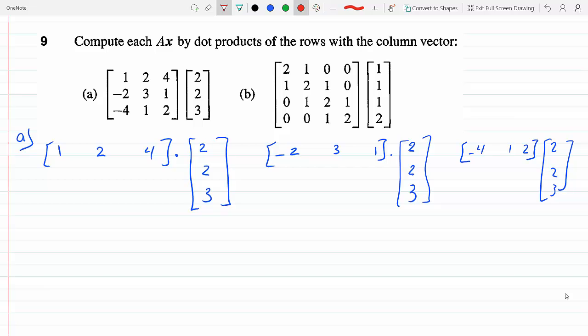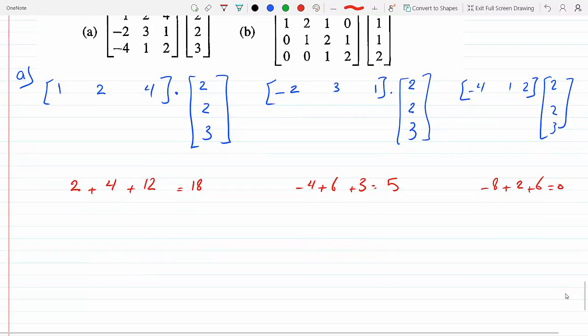this is going to be 1 times 2 plus 2 times 2 is 4 plus 4 times 3 is 12, so this is going to be 18. The second one will be minus 4 plus 6 plus 3, so that's 9 minus 4 is 5. And the third one is minus 8 plus 2 plus 6.